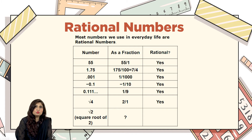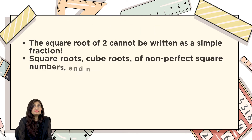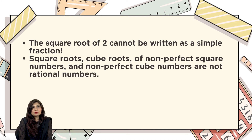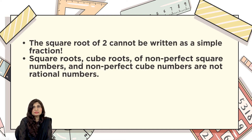Now look at the next number — can you find the square root of number 2? Pause this video and try to get the answer. The square root of number 2 cannot be written as a simple fraction. It means that square roots and cube roots of non-perfect square numbers and non-perfect cube numbers are not rational numbers. Then what are these numbers?